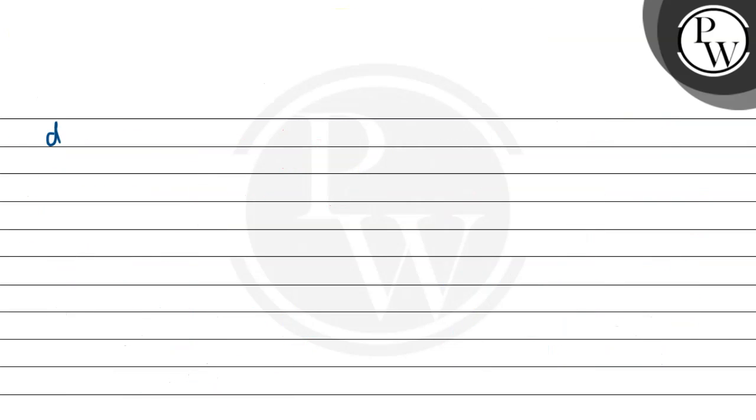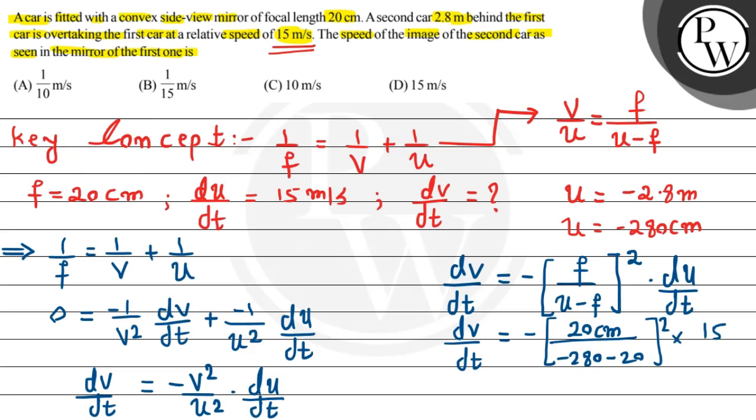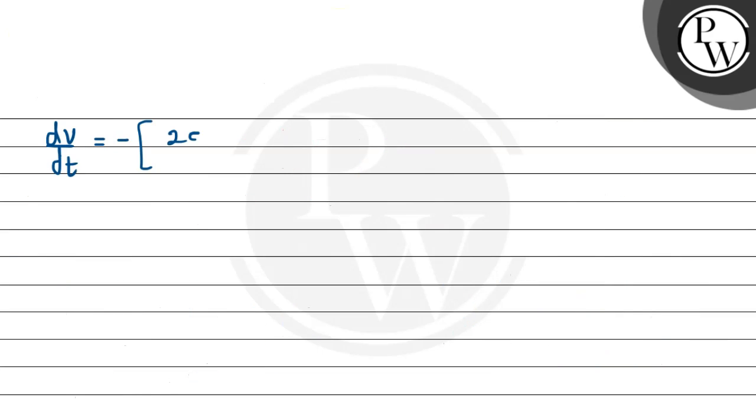Further simplifying, we get dv/dt will be equal to minus. In numerator we will have 20 and in denominator we will have minus 300. So it will be 20 divided by minus 300, that whole square multiply by 15.